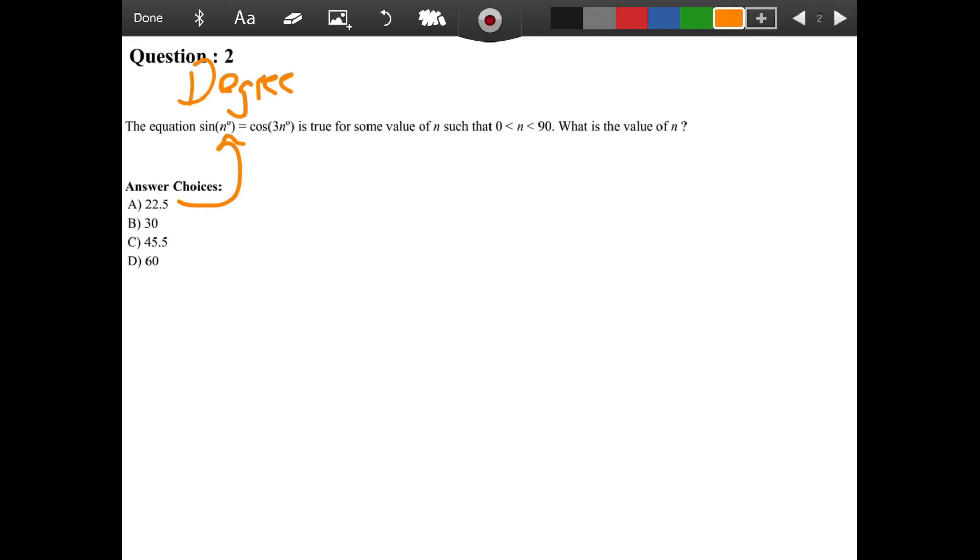That's very important when we're doing these type of functions. So first one I want to do, I can plug in sine 22.5 degrees right into my calculator. And I get 0.38. Then I can do cosine of 3 times 22.5 degrees. Plug that in, so that's cosine of 67.5 degrees.